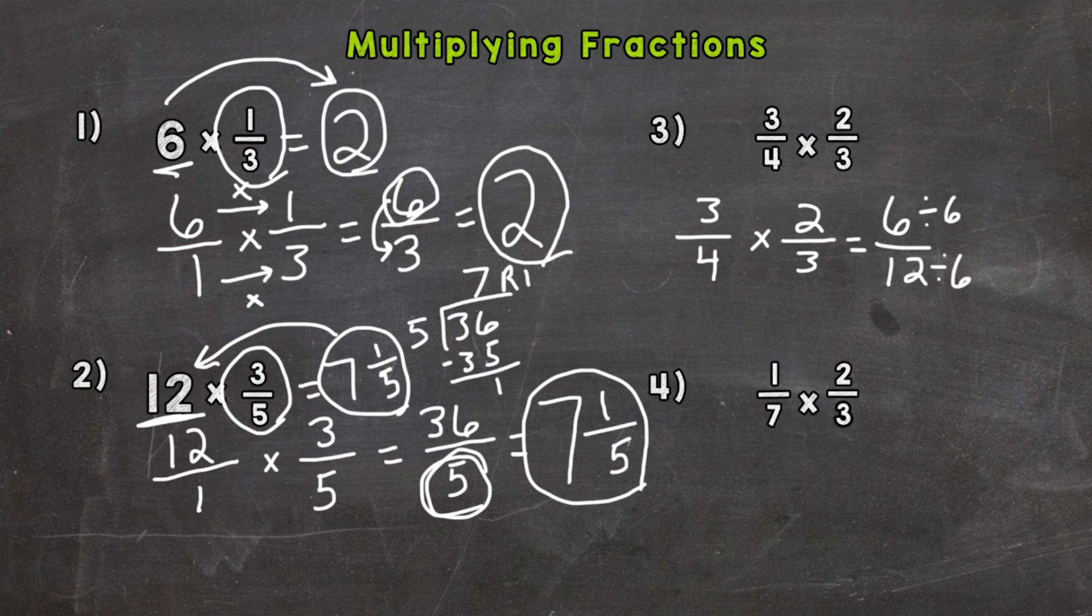And that greatest common factor is six. So let's divide both of these by six. Six divided by six is one, and twelve divided by six is two. Now that fraction cannot be broken down anymore. The only common factor between one and two is one, so we are done. The answer to number three is one-half.